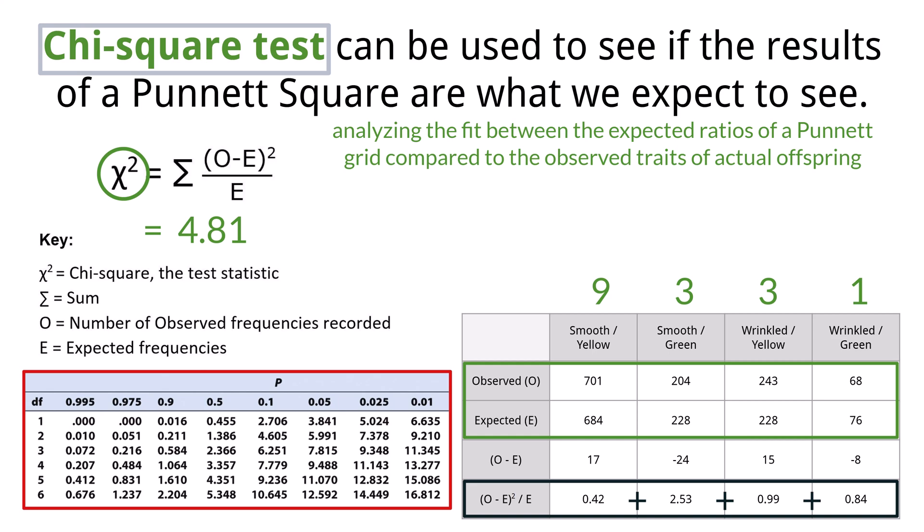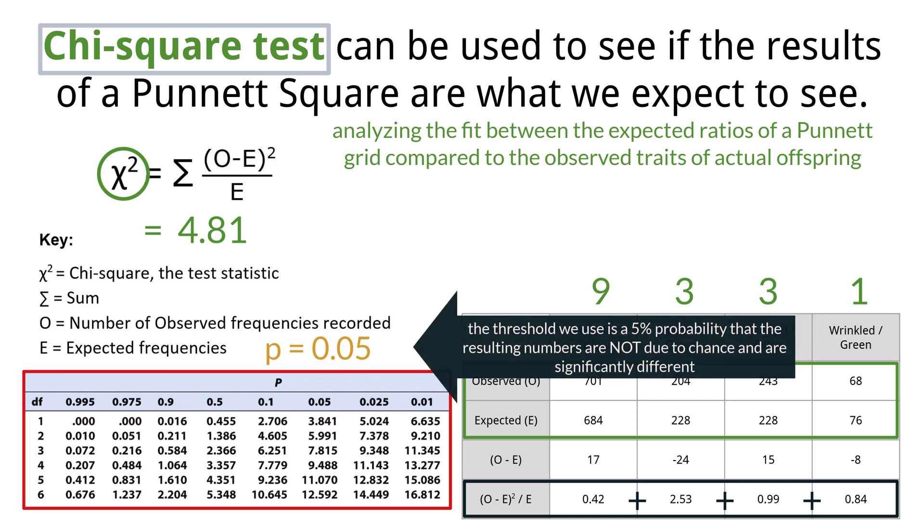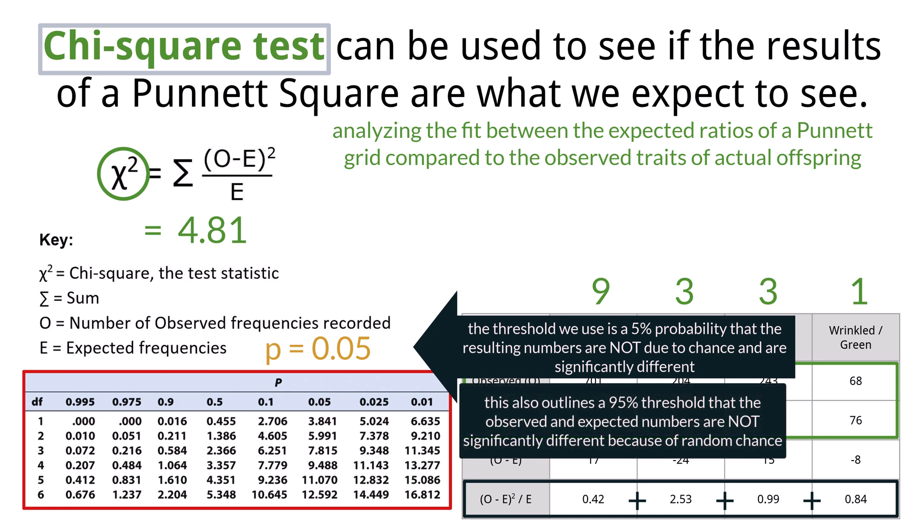In biology, we use an alpha, or probability level (lowercase p), of 0.05. This means that there is only a 5% probability that the results are not due to chance alone and are therefore significantly different. On the flip side, there is a 95% chance that the results are due to randomness or random chance and are therefore not significantly different.